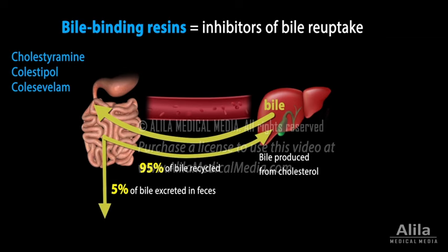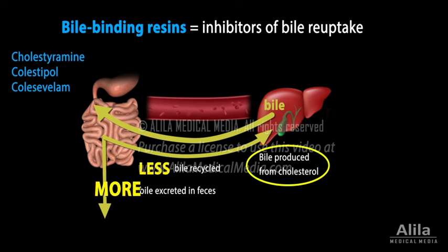Another class of drugs are inhibitors of bile reuptake. Normally, about 95% of bile acids delivered to the duodenum are reabsorbed back to the liver. The 5% that is excreted in feces is compensated for by newly synthesized bile in the liver. Bile-binding resins adhere to negatively charged bile acids in the small intestine, preventing them from being reabsorbed, thus promoting their excretion. As more bile is excreted in feces, the liver produces more new bile from cholesterol, effectively removing more cholesterol from the blood.